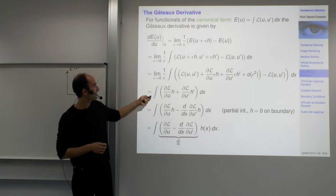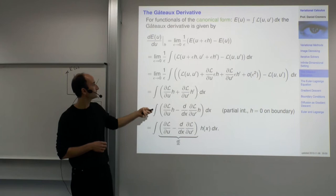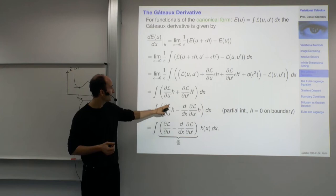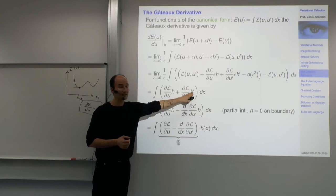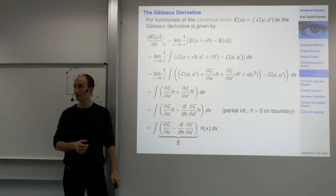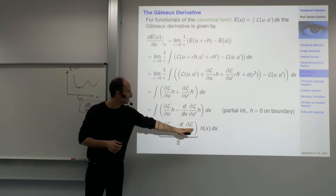The constant term cancels out. Taking the limit as epsilon goes to zero, second-order terms vanish, and we are left with two terms. We want this to be a projection onto h. One term is already projected onto h, but the other has h prime. We can do integration by parts to get h there, with the derivative of the second term.